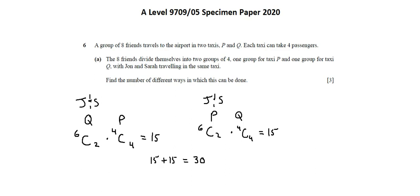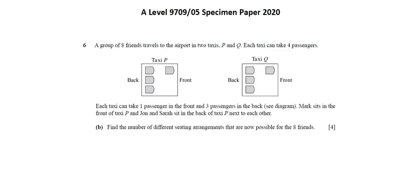Let's continue on to requirement B. Each taxi can take one passenger in the front and three passengers in the back. Mark sits in the front of taxi P, and John and Sarah sit in the back of taxi P, next to each other. Requirement B: find the number of different seating arrangements that are now possible for the eight friends.